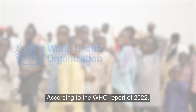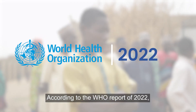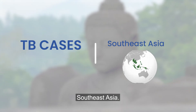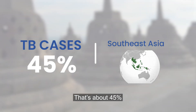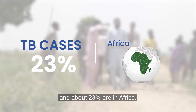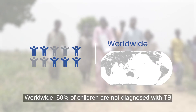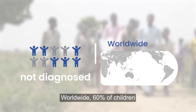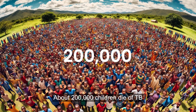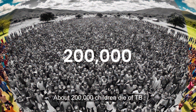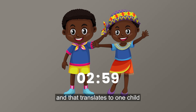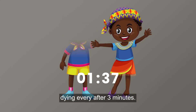According to the WHO report of 2022, most of the TB cases are found in Southeast Asia — that's about 45% — and about 23% are in Africa. Worldwide, 60% of children are non-diagnosed with TB. About 200,000 children die of TB, and that translates to one child dying every three minutes.